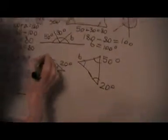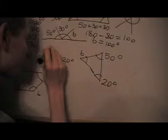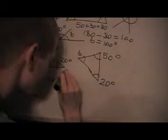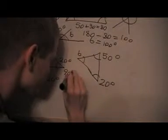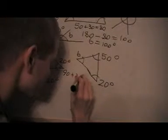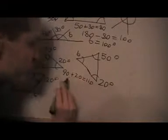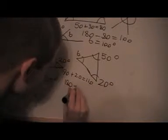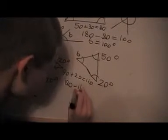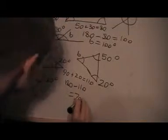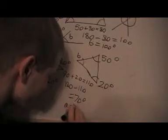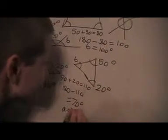This one here has a right angle, so it's 90 degrees. So I do 90 plus 20, which is 110. I subtract that from 180 because that's what the angles in a triangle add up to. So this angle A is 70 degrees — equal to 70 degrees.